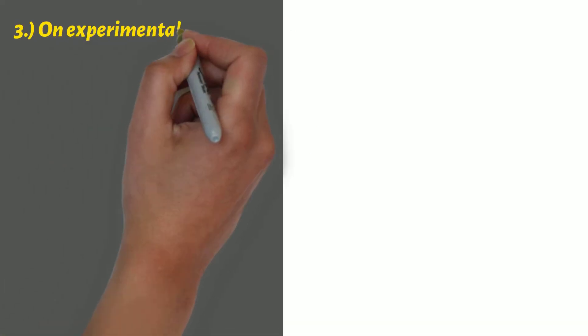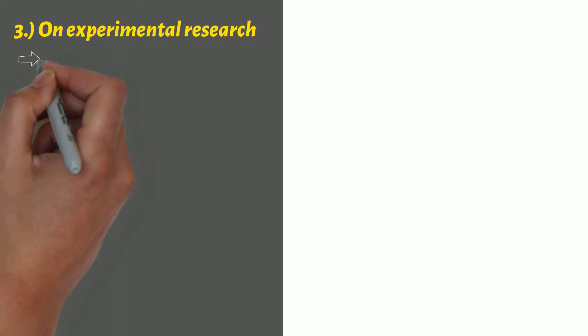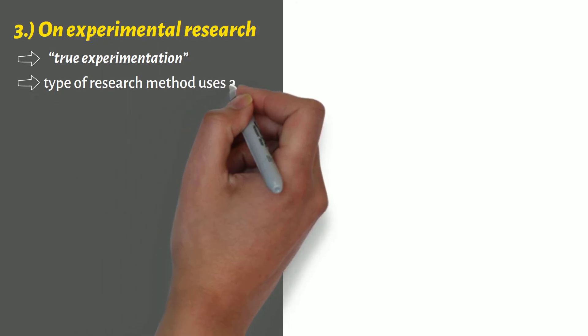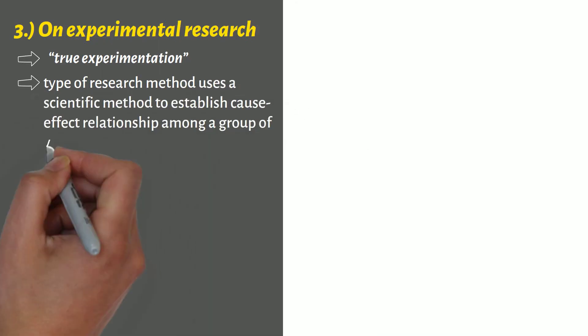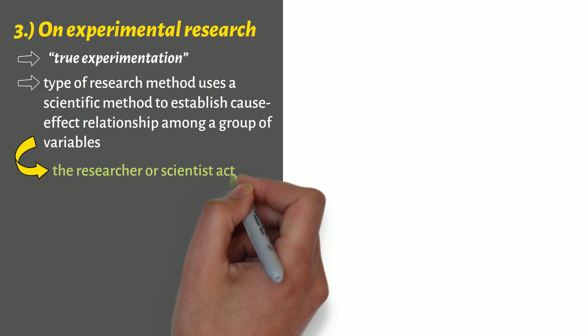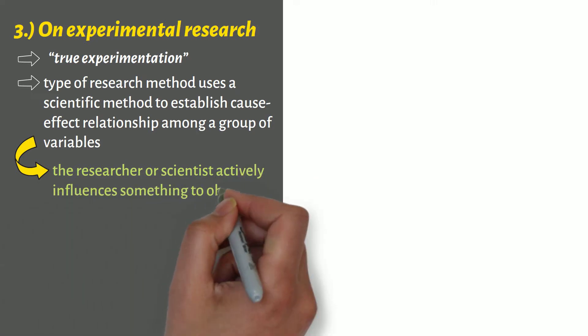Third, on experimental research. Often referred to as true experimentation, this type of research method uses a scientific method to establish cause-effect relationship among a group of variables. In this type of research, the researcher or scientist actively influences something to observe the consequences.